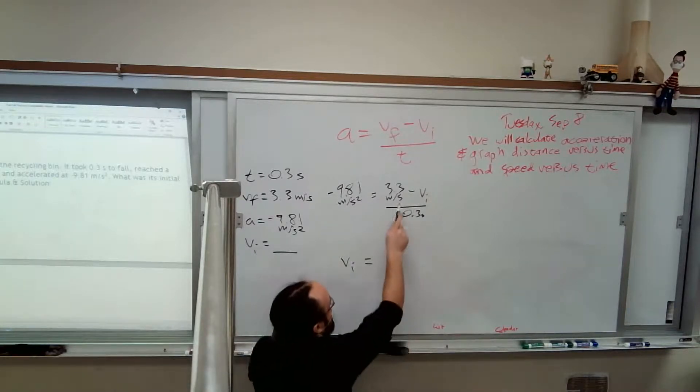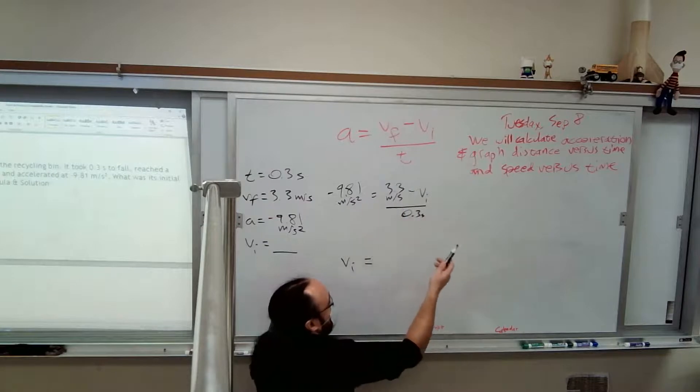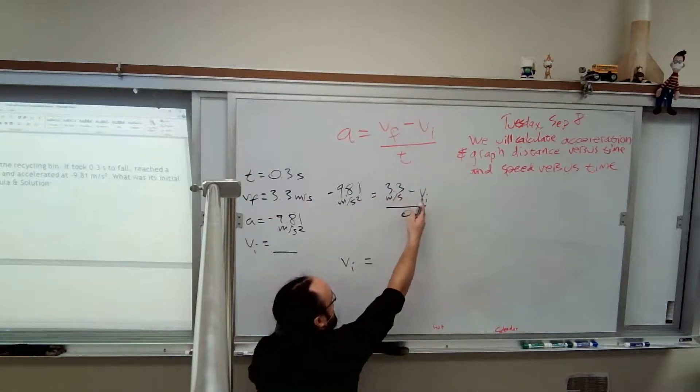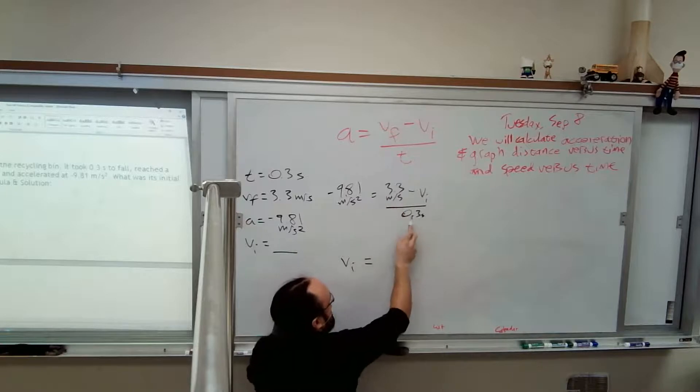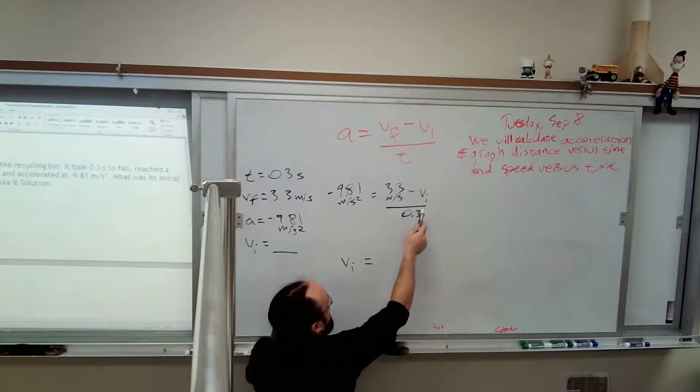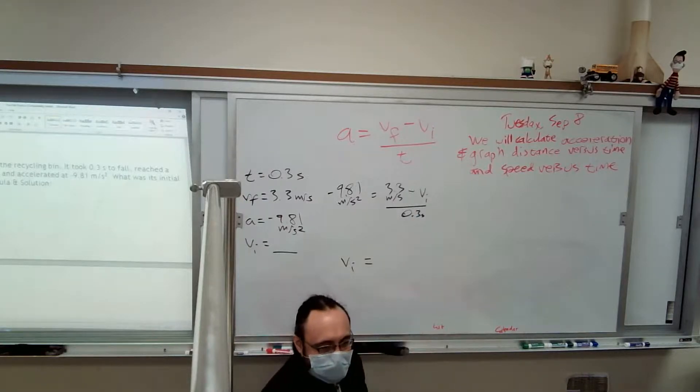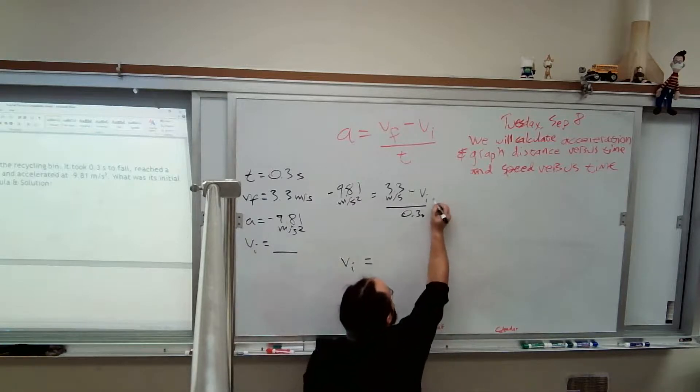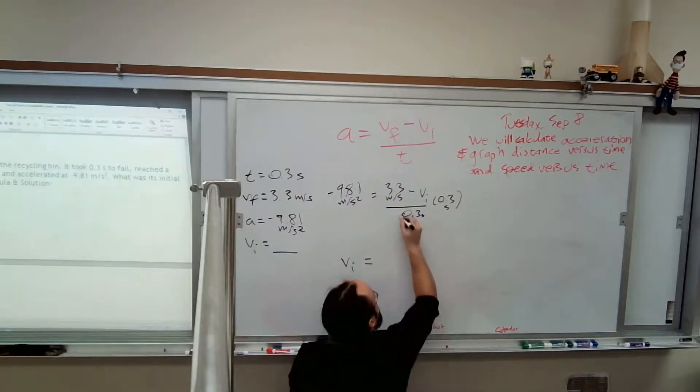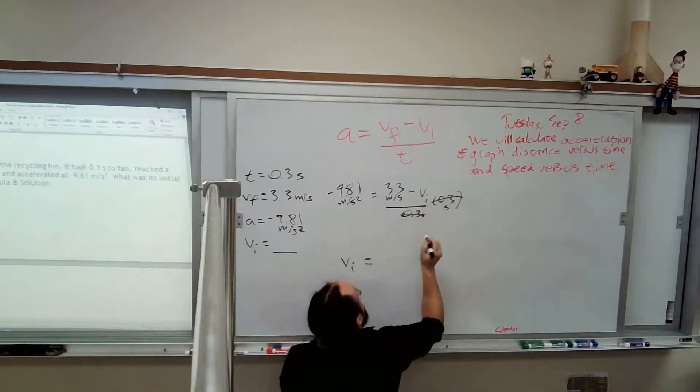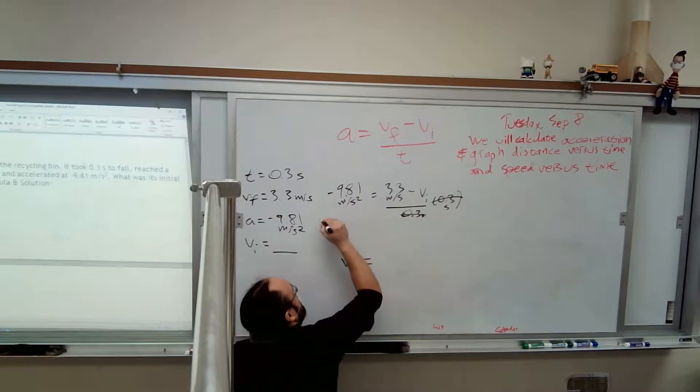If we try to get rid of this 3.3 first, we could, but if we separate this from this, we have to keep each of them over 0.3. So we'd have to start by saying 3.3 meters per second divided by 0.3 minus Vi divided by 0.3. And then it gets complicated. So get that thing out of the denominator first. 0.3 seconds, one on bottom, one on top. I did it to one side. I've got to treat it both sides equally. And 0.3 times 9.81.